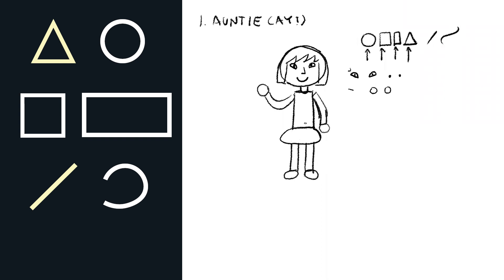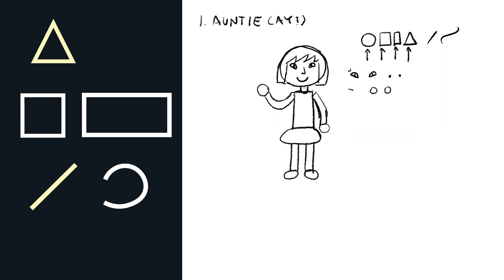Let's work on her shirt. Should we give a collar to her shirt? What kind of shape can we use there? A circle — that sounds good. Should we do short sleeves or long sleeves? Short sleeves. I'm just going to erase the stuff on the inside.